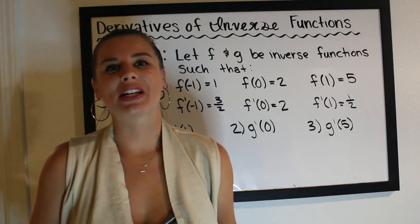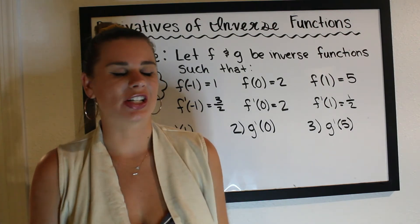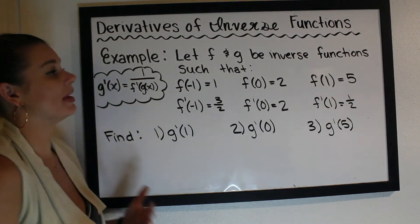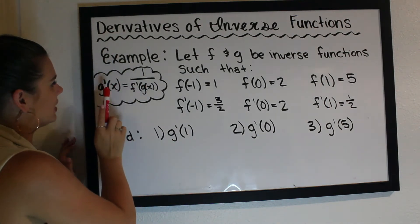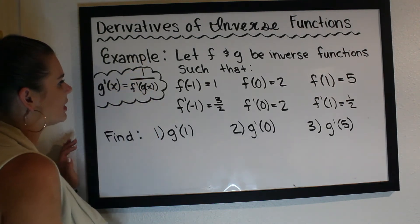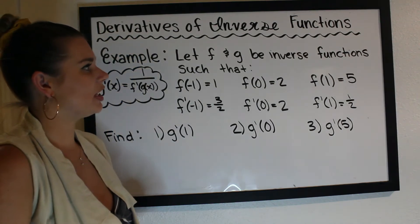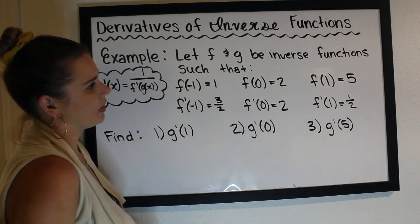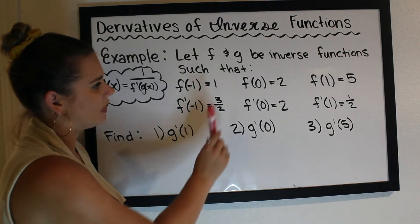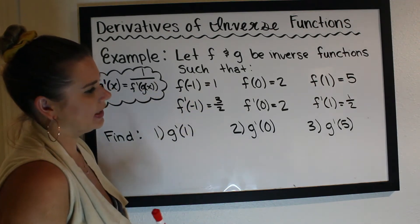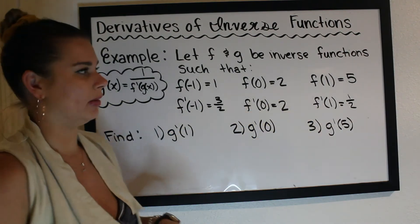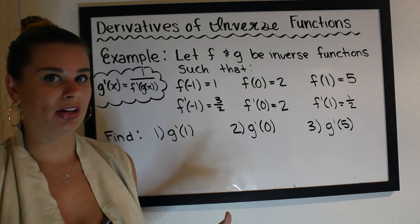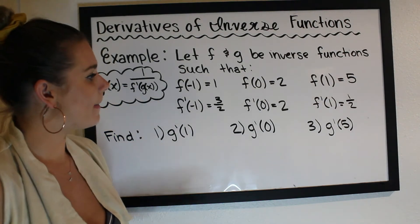Here we have an example using what we've learned about derivatives of inverse functions. The rule is: if f and g are inverse functions, then g prime of x equals one over f prime of g of x. Our example says: let f and g be inverse functions such that f of negative one equals one, f of zero equals two, f of one equals five, f prime of negative one equals three halves, f prime of zero equals two, and f prime of one equals one half. We'll evaluate each part given this information — some might not be possible if we don't have enough information.